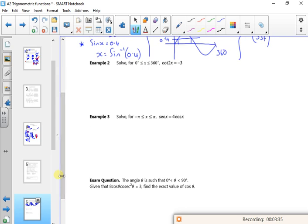So I'm going to look at the next one, Example 2. So I've got cot 2x. Let's have a look then. Cot is 1 over tan, so 1 over tan 2x is minus 3. Flip it, so tan 2x is minus 1 third.